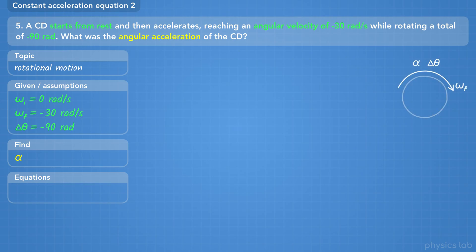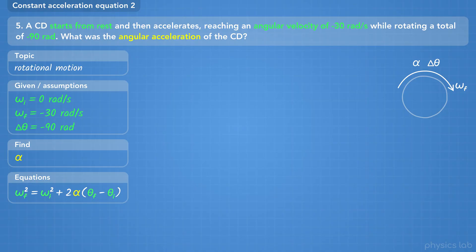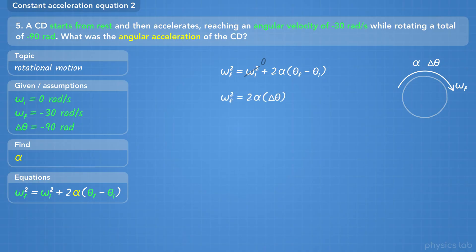Here's a quick sketch of the CD, showing that it's rotating clockwise because the final angular velocity is negative. We've noted the angular acceleration and angular displacement while it accelerates. We'll use the second equation for angular motion with constant acceleration. We can simplify by crossing out omega initial since the initial angular velocity is 0, then replace theta final minus theta initial with delta theta.